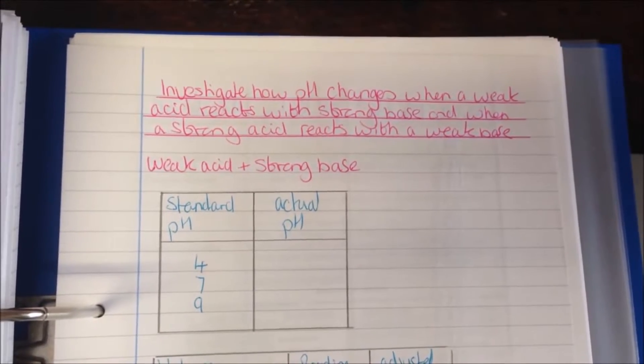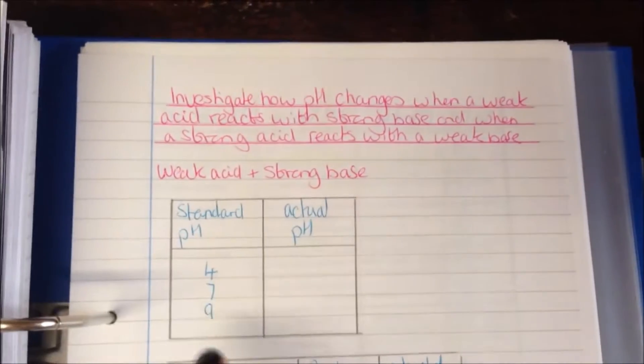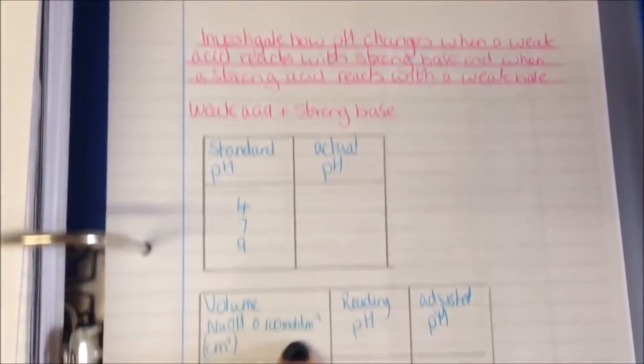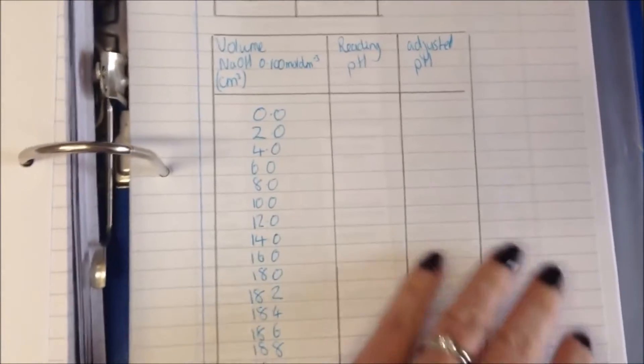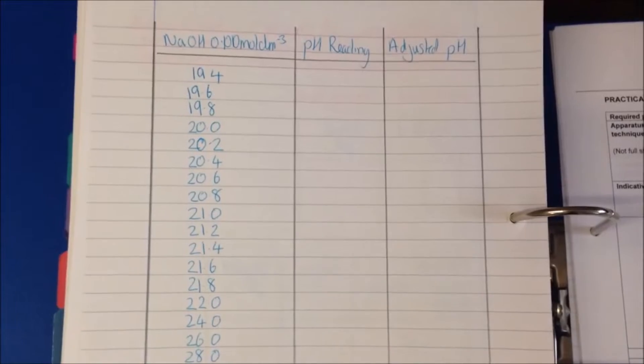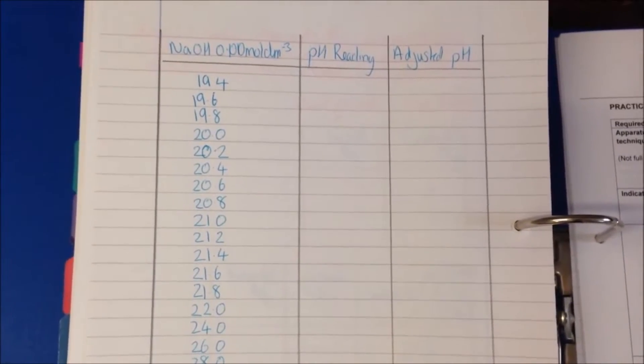So we are going to be looking at mixing a weak acid and a strong base. First of all we need to use the standard to make a regression curve and then we are going to be taking a large number of readings. You can see I've already got my table pre-drawn for this. This is something essential you're going to have to do in your lab books.